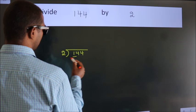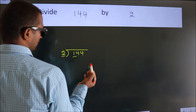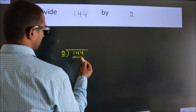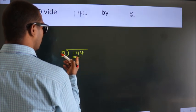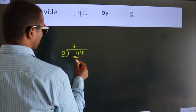Next, here we have 1, here 2. 1 is smaller than 2, so we should take 2 numbers: 14. When do we get 14? In 2 table. 2 times 7 equals 14.